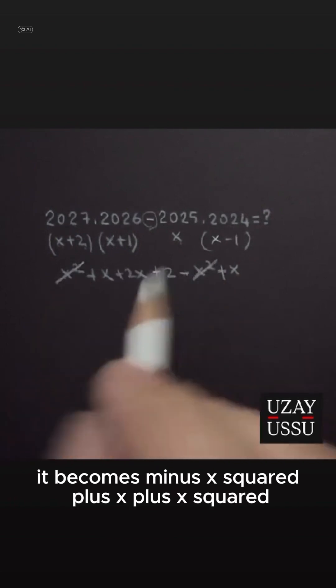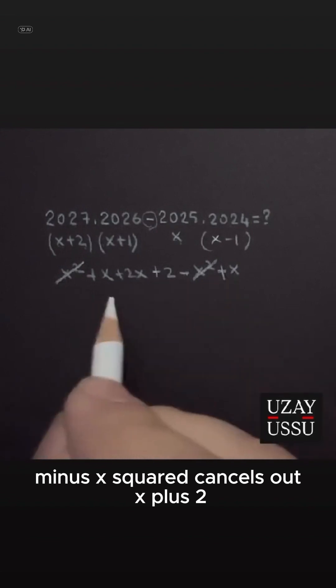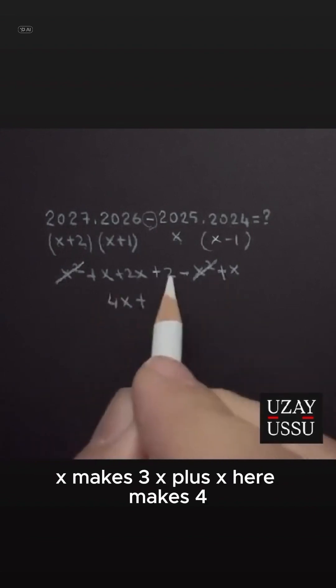x squared minus x squared cancels out. x plus 2x makes 3x, plus x here makes 4x plus 2.